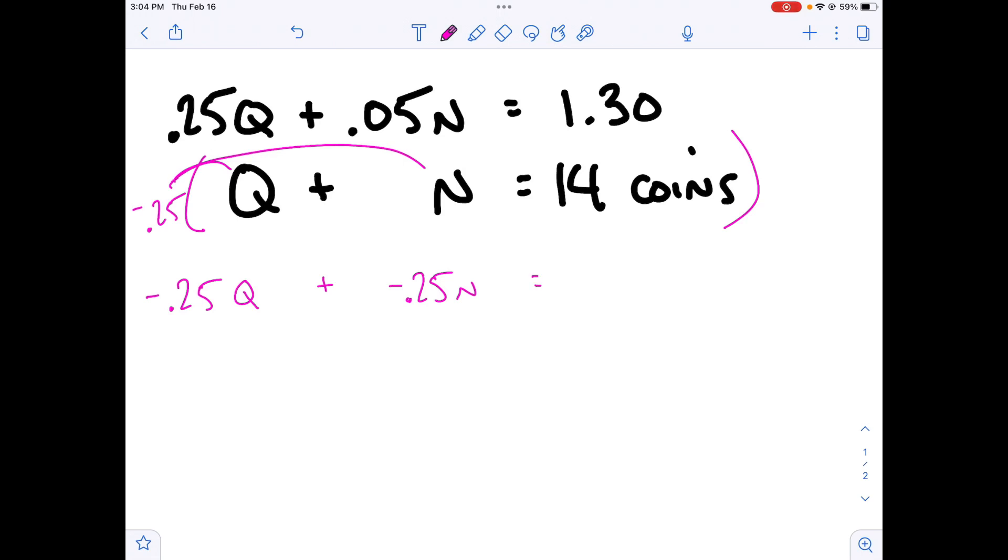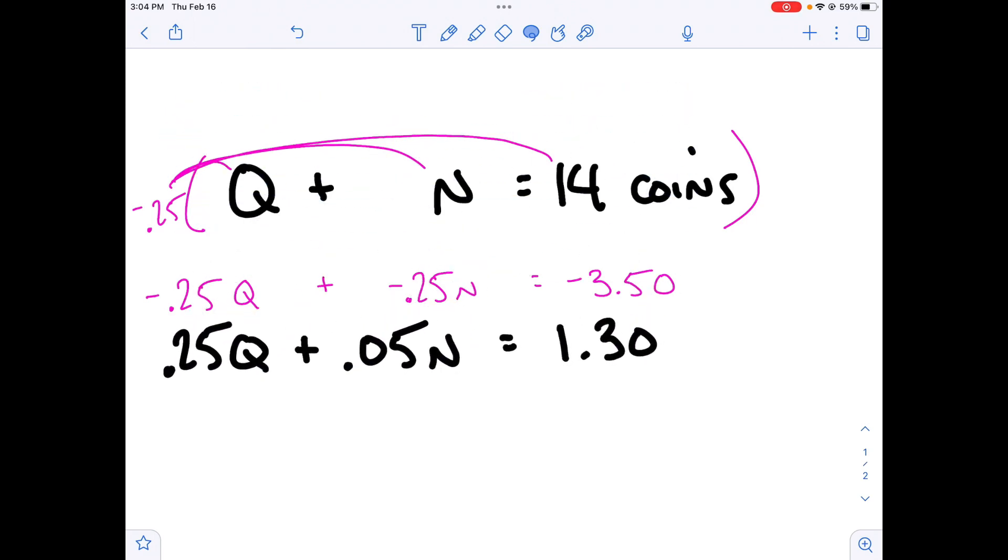Don't worry about the fact that a nickel is worth 0.05 dollars. We're just distributing. And 0.25 times 14 is, I believe, negative 3.5. I'm going to put a 0 on there just so everything matches up. Okay. So I've done my distributing. And now, since we're using elimination, I'm going to use my lasso tool one more time. I'm going to bring this down here. We're going to get everything lined up and we're simply going to add our columns.